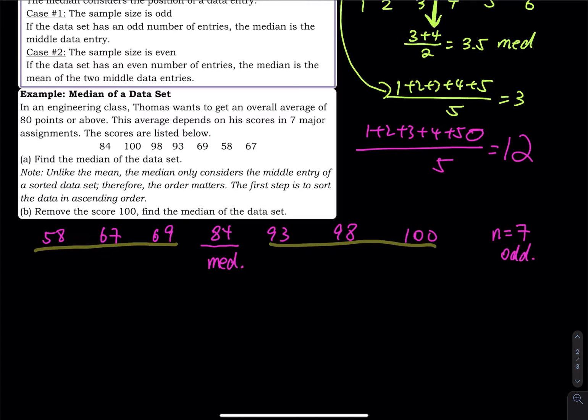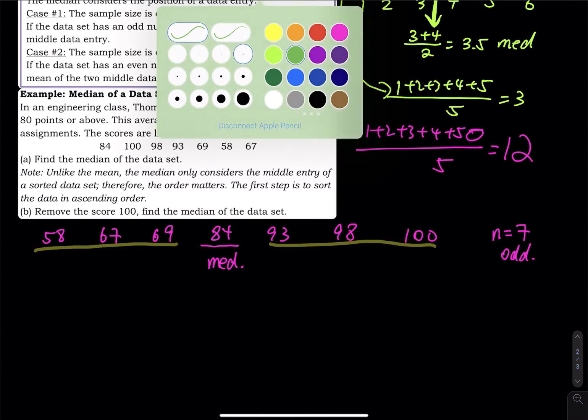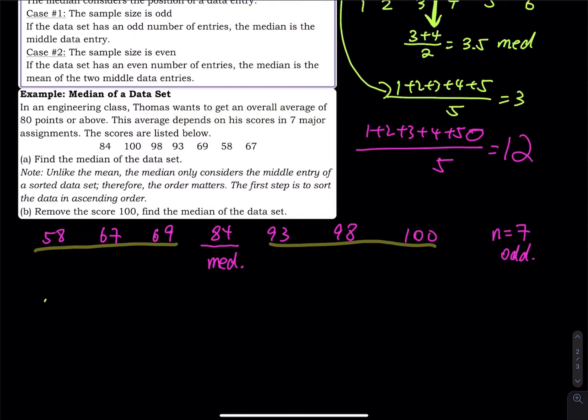And then in part B, I ask you to remove the 100. Okay, let's remove that. We switch color in the meantime. 58, 67, 69, 84, 93, 98. So the 100 is removed. So now the data set, we have six numbers in here. So six is even.